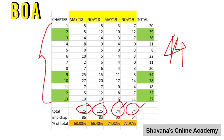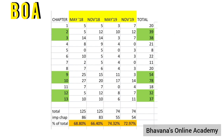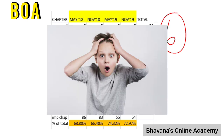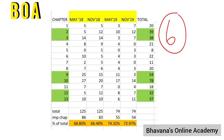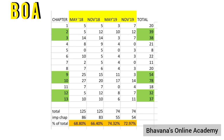From this analysis, we found there are six chapters which, in each exam, had the weightage sufficient to pass or score exemption. If you had thoroughly read just these six chapters before the exam, you would have definitely passed or scored exemption. Out of 13 chapters, the six most important ones are chapter numbers 2, 3, 9, 10, 12, and 13.